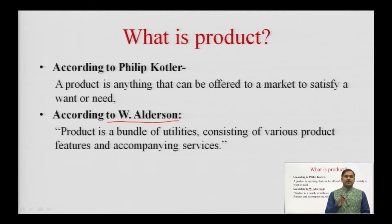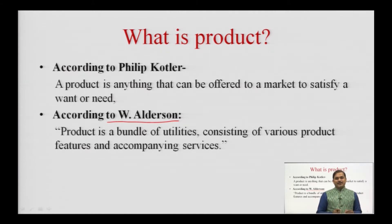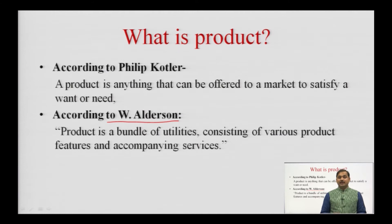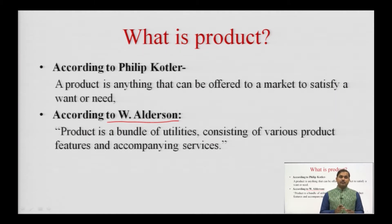To take a short example: for recording lectures, we need a light system, a sound system, and a camera — all of these are products, each having certain utilities and offering certain benefits. The camera offers the benefit of recording lectures for future viewing. To provide those features, it has a film, a recording system, and can record sounds, pictures, and motion.